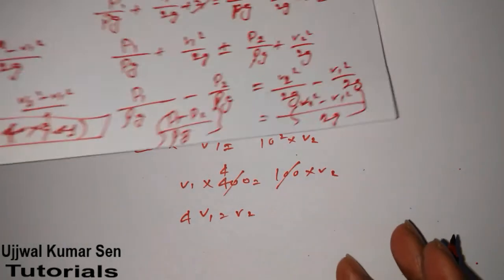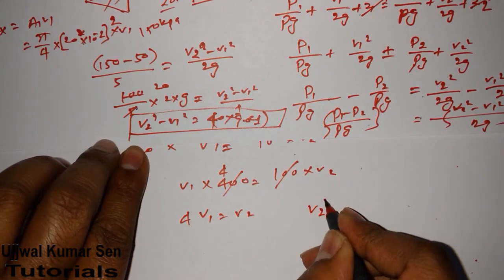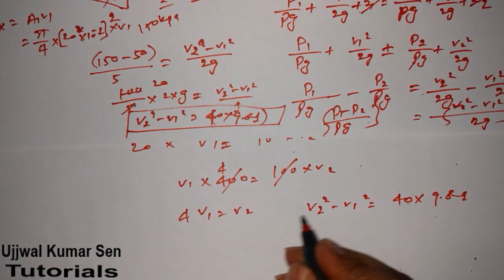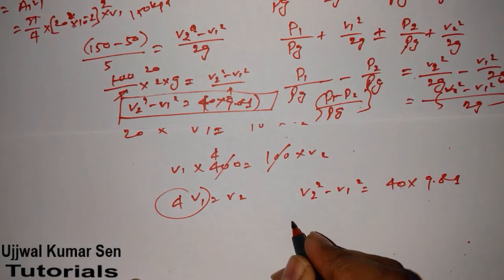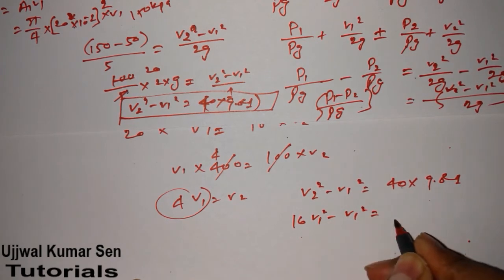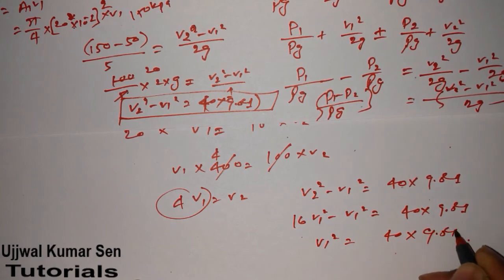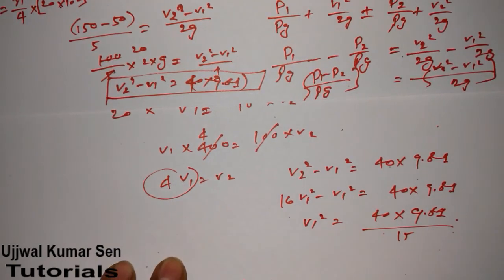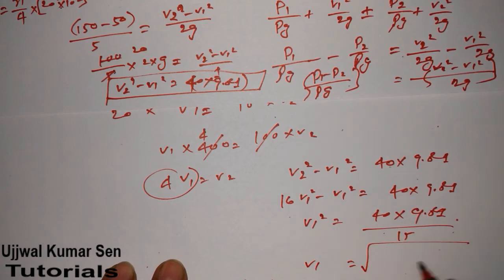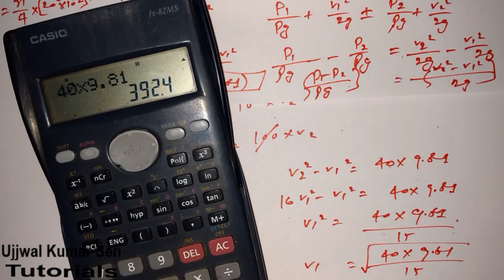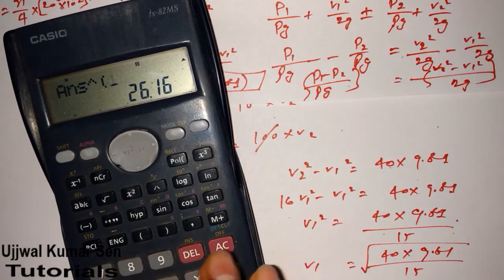We get 16V₁² - V₁² = 40 × 9.81, so 15V₁² = 40 × 9.81. Therefore V₁ = √(40 × 9.81/15). Using calculator, divide by 15 and find the root. We get V₁ = 5.11 m/s.